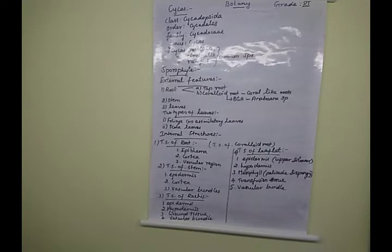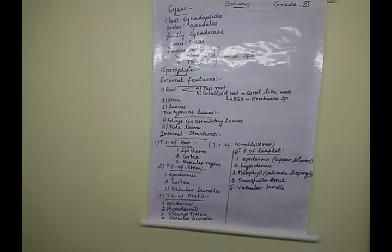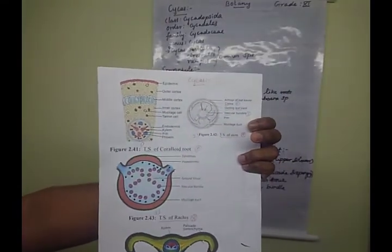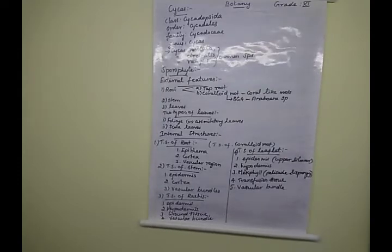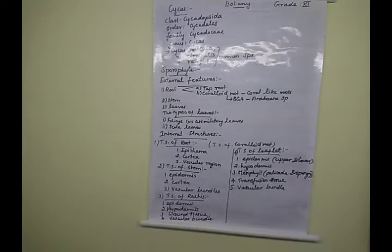What is the nature of the xylem elements in the young root and older root? In the young root, the xylem is in a diarch condition, meaning two bundles of xylem are present. In the older root, they are in a tetrarch condition — tetra means four — so four bundles of xylem elements are present.